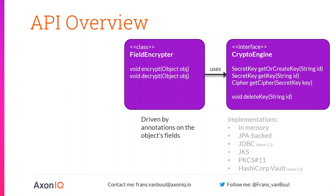The beauty of this architecture is that there are many different implementations of CryptoEngine possible. We deliver six different ones with the product itself, and since it's an open interface, you could implement your own CryptoEngines. The ones we deliver include an in-memory CryptoEngine for testing purposes, relational database storage via either JPA or JDBC, hardware security modules through the PKCS 11 and JKS interface, and since version 1.2, specific integration with HashiCorp Vault. We'll come back on that and discuss it in a lot more detail because it has a number of really interesting applications.